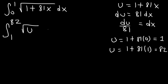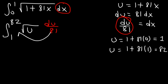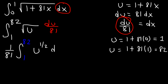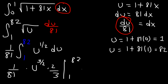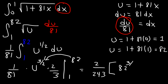This becomes the integral of the square root of u, and let's replace dx with du divided by 81. Move the constant to the front — that is, the 81 — so we have 1 over 81, integration from 1 to 82, of u to the 1 half. To integrate: add 1 to 1 half, that's 3 over 2. Instead of dividing by 3 over 2, multiply by 2 over 3. With 1 over 81 in front, 1 times 2 is 2, and 3 times 81 is 243. Now let's plug in 82 first: 82 to the 3 halves.